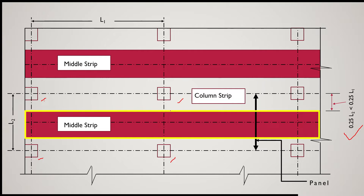As per IS456, the middle strip is the strip surrounded by the column strips. On each side there is a column strip, and the area between them is the middle strip. Depending on the size, we decide how to design the flat slab. Both the middle strip and the column strip must be considered along both directions — along L1 as well as L2.